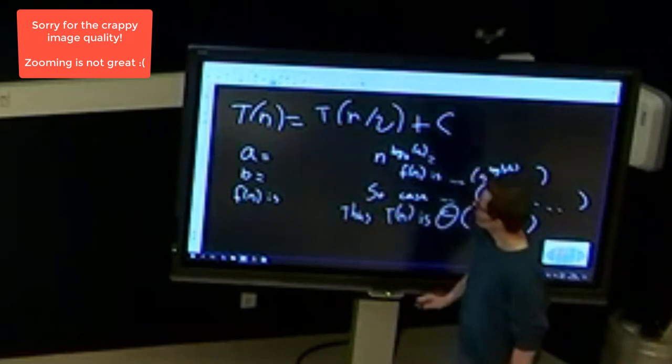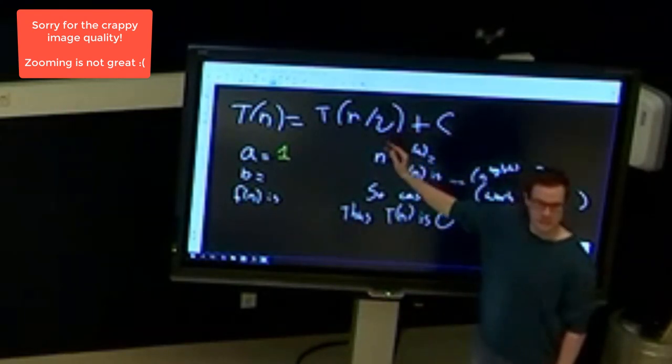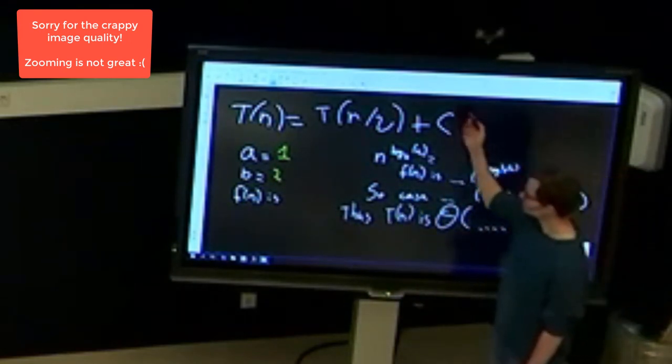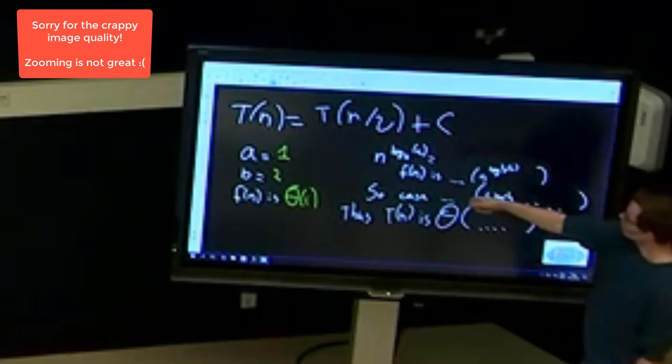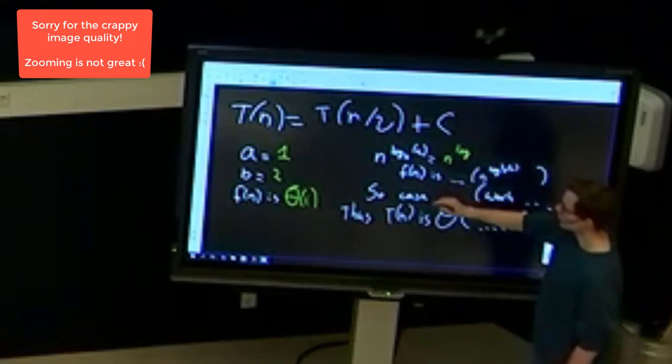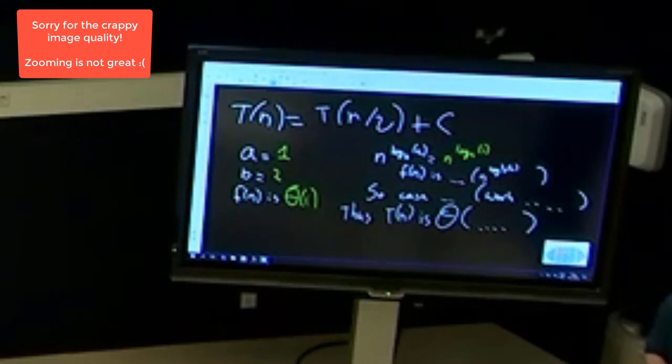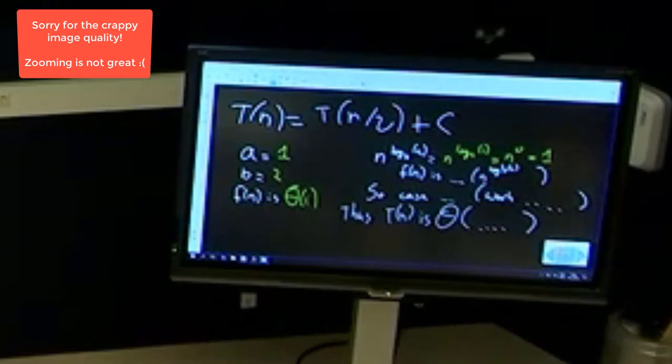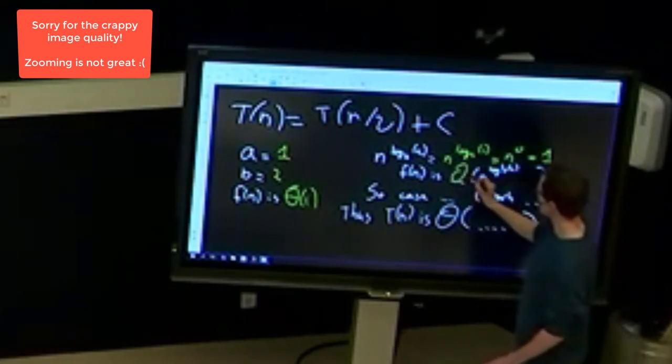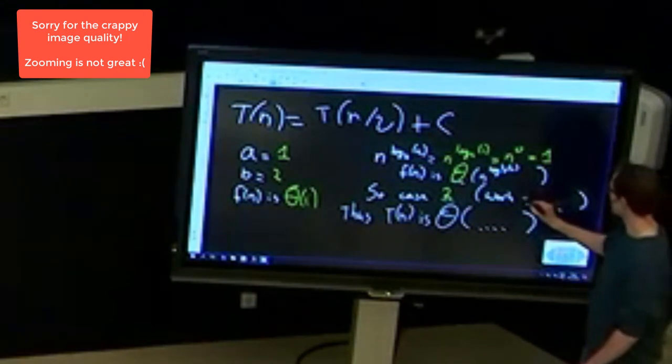So let's see if we can figure it out. a, well a was the number in front of this T, so a is one. b, well b was this number that we were dividing by, so b equals 2, and f(n) was this thing, so f(n) is some constant amount of work. Now let's compute n to the power log_b of a, so that's n to the power log 2 of 1. The log 2 of 1 is, yes, 0, so n to the power 0, ah, okay, so just one.